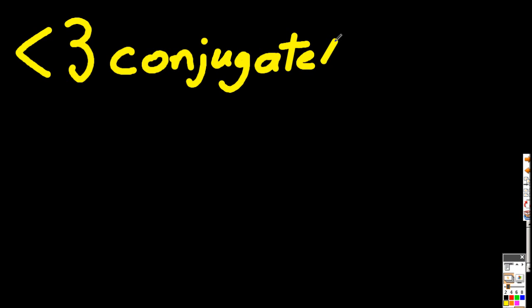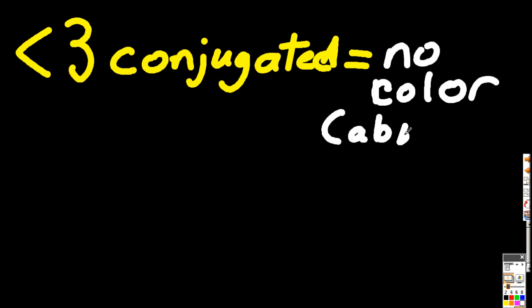So if there's less than three sets of these conjugated double bonds, they will actually absorb ultraviolet only. And so it will have no color. The actual chemical itself will have no color. If you absorb ultraviolet, well, that doesn't matter. I can't see ultraviolet.